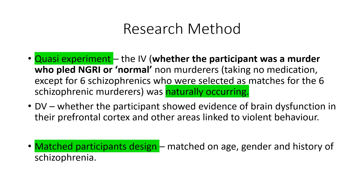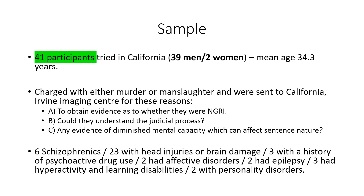A matched participants design was used to control extraneous variables. Participants were matched on age, gender and history of schizophrenia across the different control groups. The sample consisted of 41 participants tried in California — 39 men and two women — with a mean age of 34.3 years. They were charged with either murder or manslaughter and were sent to a California imaging centre to obtain evidence as to whether they were NGRI, whether they could understand the judicial process, and for any evidence of diminished mental capacity.